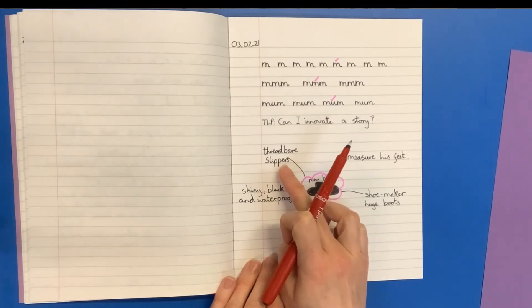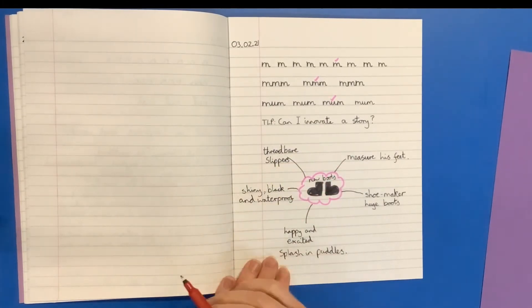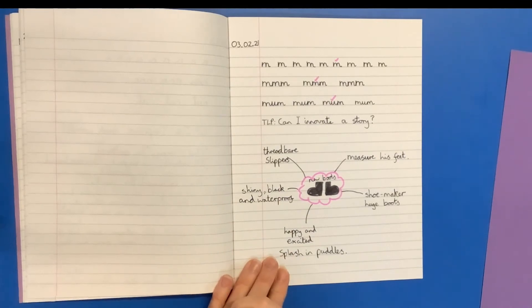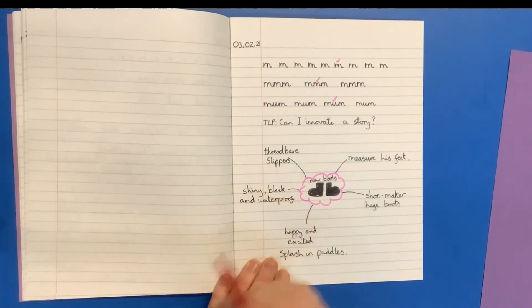Threadbare just basically means really broken so that you can see your toes or whatever coming through the end of it. You could also have broken slippers. You could say, you know, toes poking through slippers. That's hard to say.